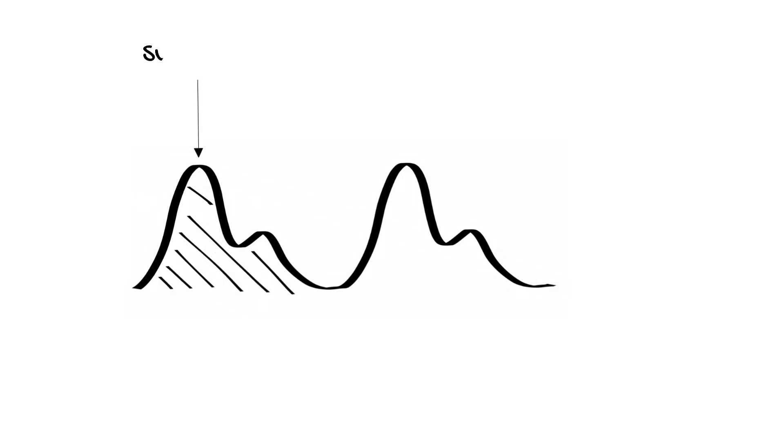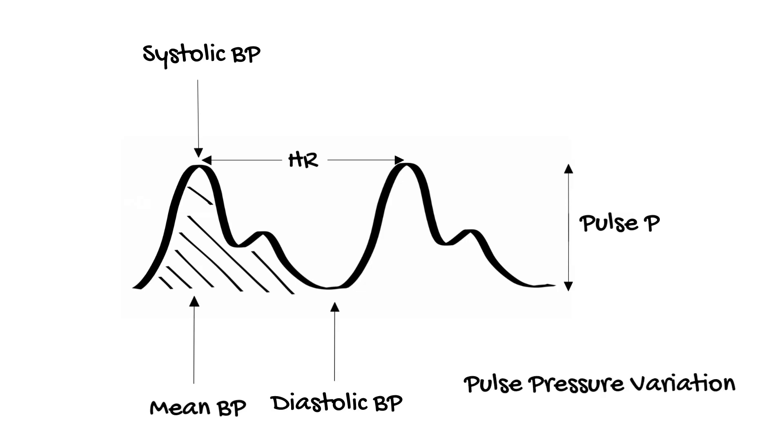So what information do we actually get from our arterial blood pressure monitoring system? The easy ones are the systolic blood pressure, the diastolic blood pressure, the mean arterial pressure, and the heart rate. In addition to those we can calculate the pulse pressure and we can also look for respiratory changes over time. This is called the pulse pressure variation.